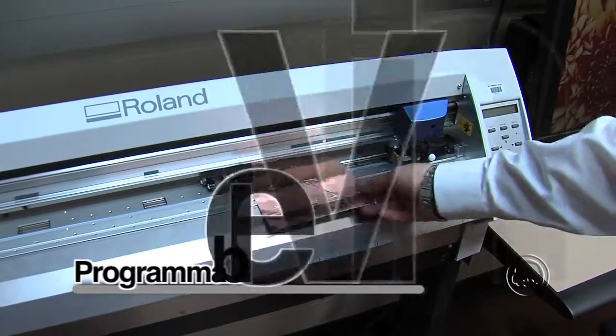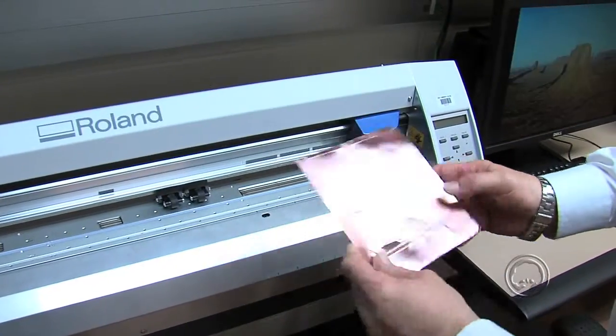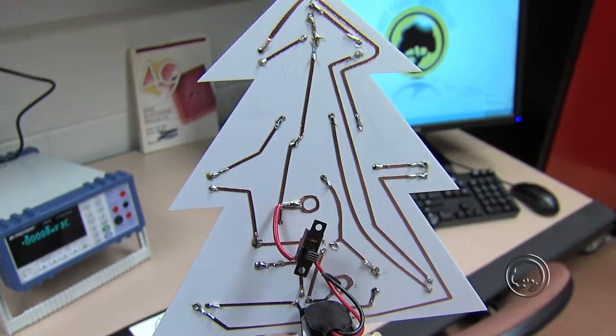We have a programmable vinyl cutter that can be used for anything as simple as making decals to making wearable circuitry where we can actually take copper-backed foil and we can make an electronic circuit that's flexible and wearable.